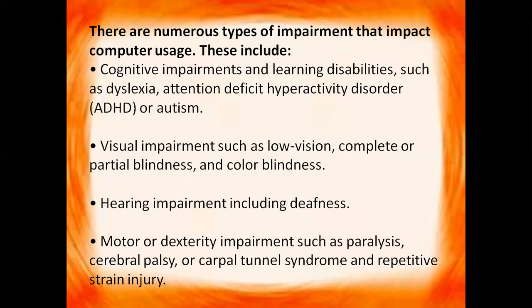Cognitive impairment means the person is not able to recognize the letters. Then we have visual impairment such as low vision, complete or partial blindness, and color blindness — the person who is not able to see properly. Hearing impairment including deafness — the person who is having problem in hearing. Motor or dexterity impairments such as paralysis, cerebral palsy, carpal tunnel syndrome, and repetitive strain injury — any kind of injury or impairment in the body.